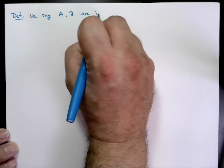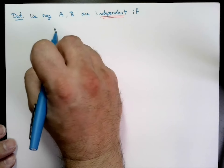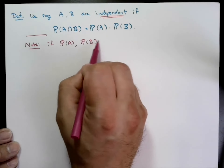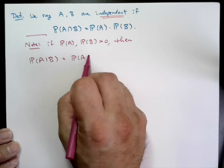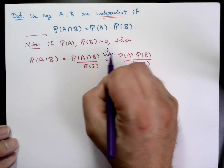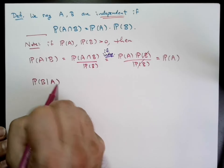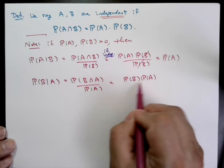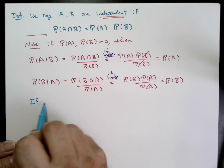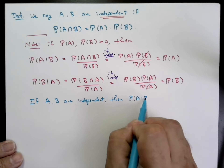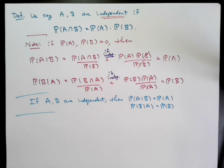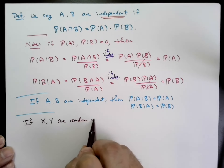Now let us define the notion of independence. We say that two events are independent if the probability of the intersection is equal to the product of the probabilities — specifically, the probability of A intersect B equals the probability of A times the probability of B. Why do we call this independent? If both have positive probabilities, under the assumption of independence, the probability of A given B is just the probability of A, and the probability of B given A is just the probability of B. Meaning that knowing A occurs does not give us any update as to whether or not B occurs. And that's a good notion of independence.